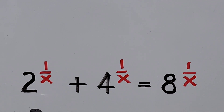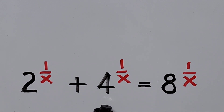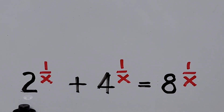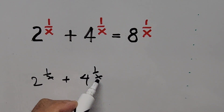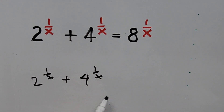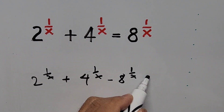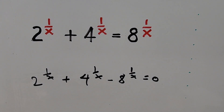So probably we can solve the equation by dividing the whole equation by 2 to the power of 1 over x, or divide by 8 to the power of 1 over x. I don't think we can use dividing by 4 to the power of 1 over x, but I will let you know in a second. So first we divide by 2 to the power of 1 over x. We transpose the right-hand term to the left side, giving minus 8 to the power of 1 over x, equals 0.